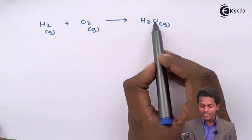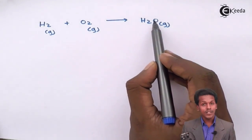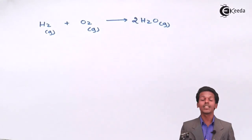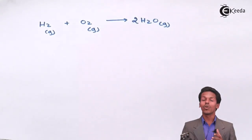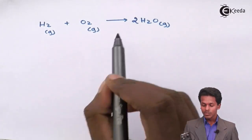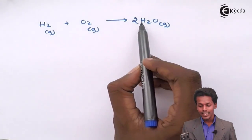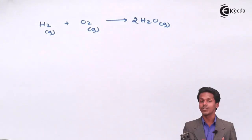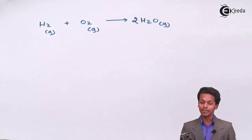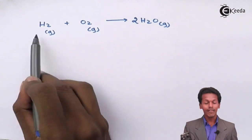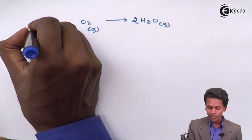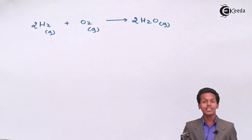To balance the oxygen, we multiply the product H₂O by 2, following the rules of stoichiometry. This gives 4 hydrogen atoms on the product side, but only 2 on the left-hand side. We balance hydrogen by multiplying H₂ on the reactant side by 2. The balanced equation is: 2H₂ + O₂ → 2H₂O.